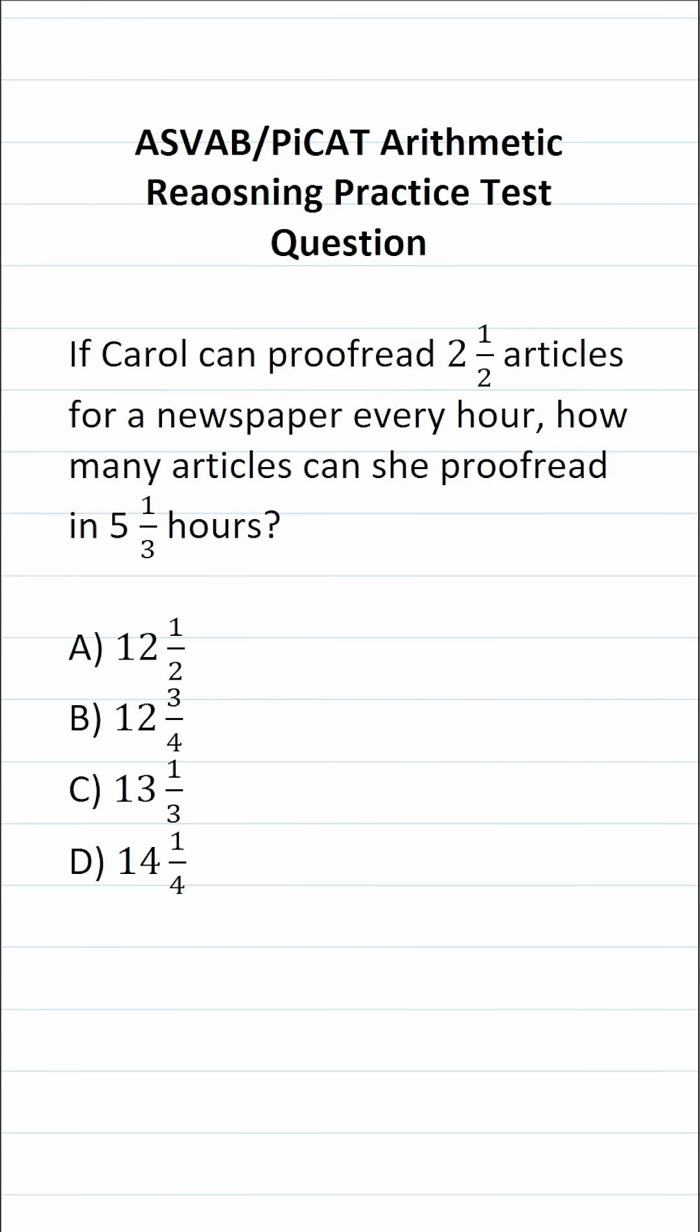This arithmetic reasoning practice test question for the ASVAB and PICAT says: If Carol can proofread two and a half articles for a newspaper every hour, how many articles can she proofread in five and one third hours?